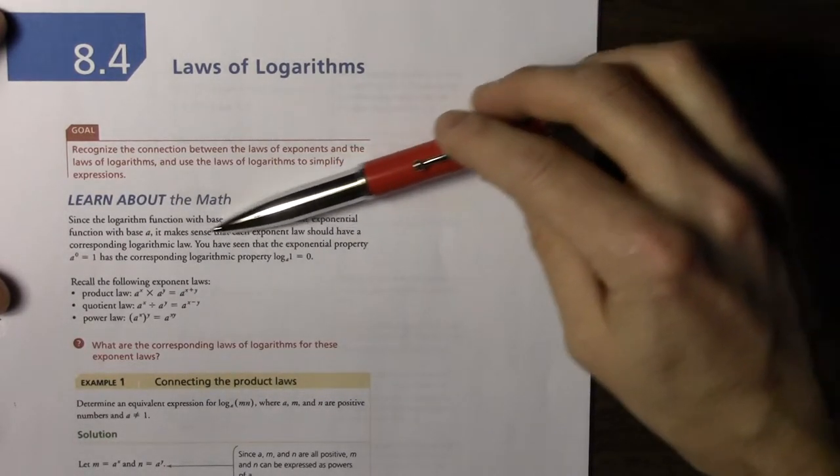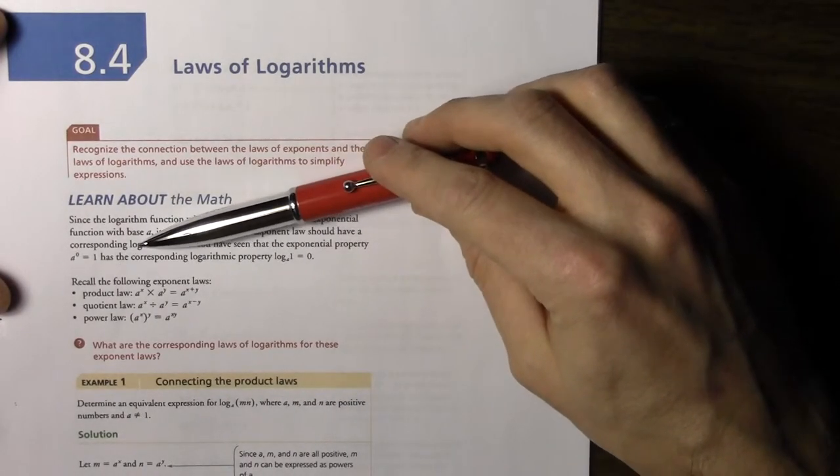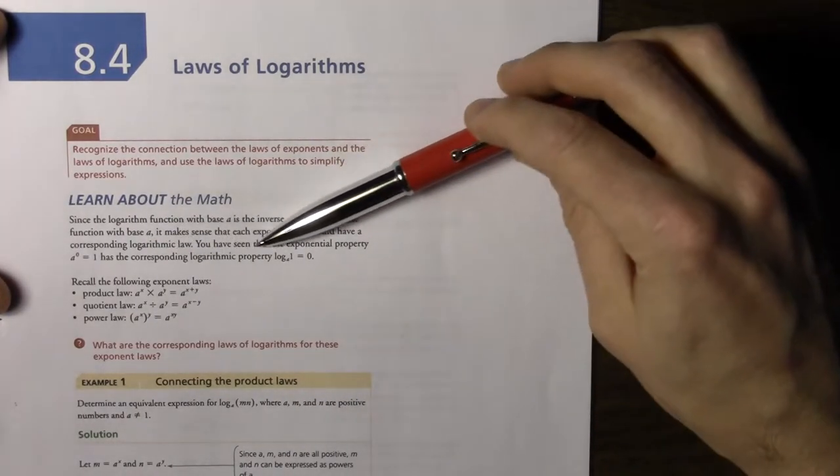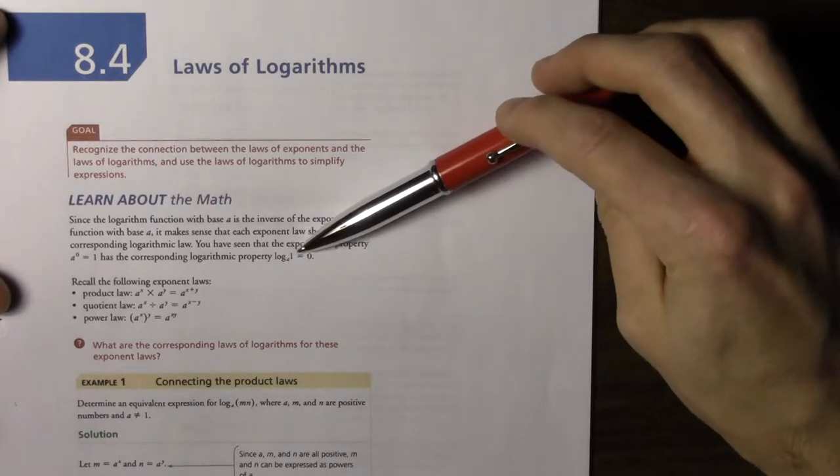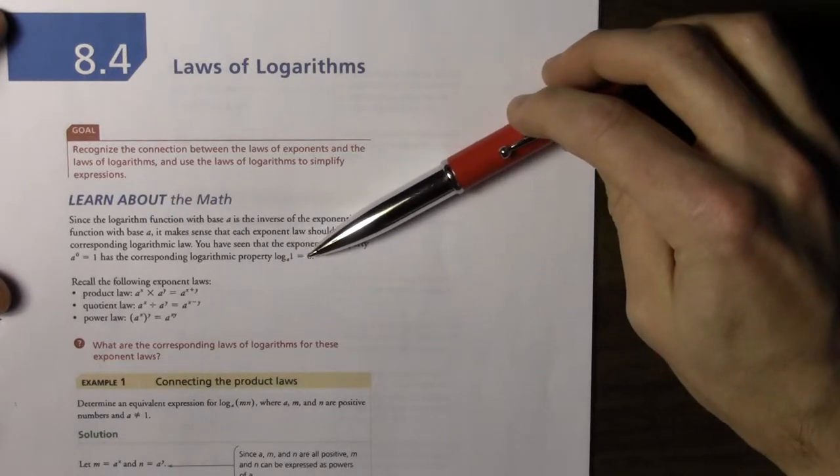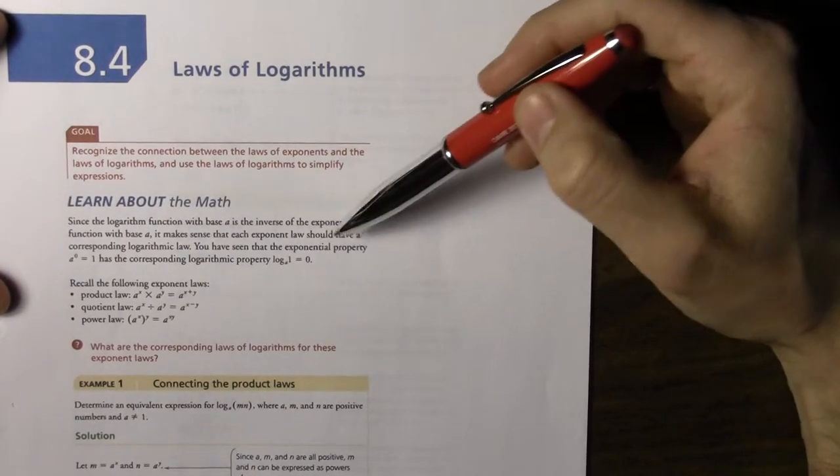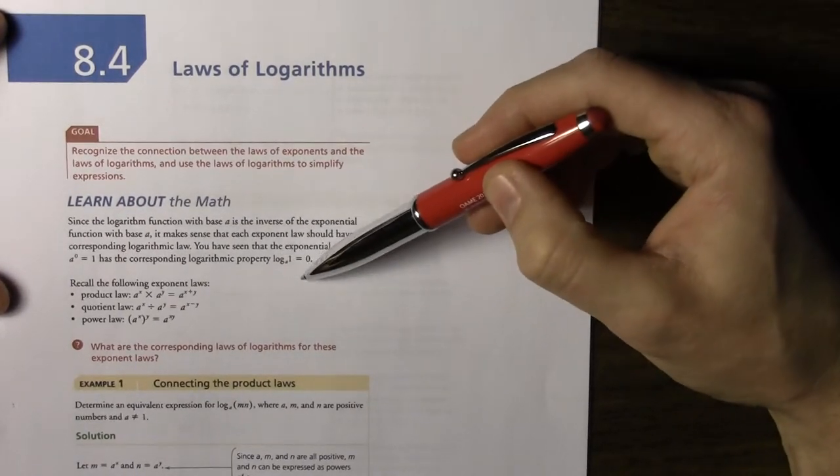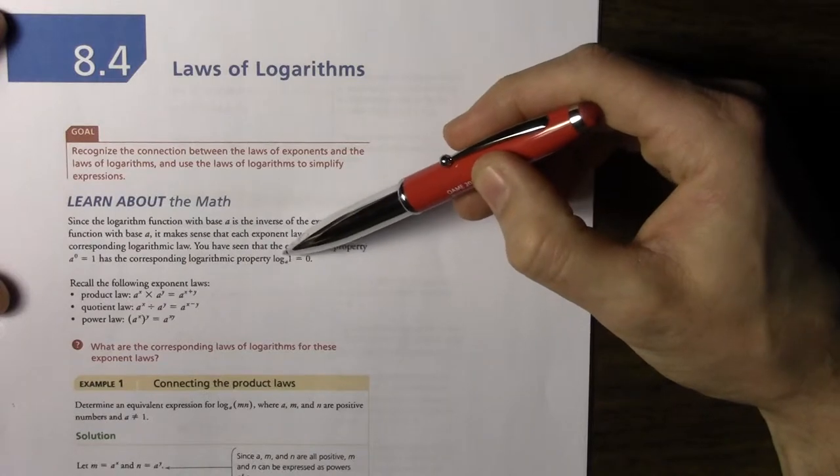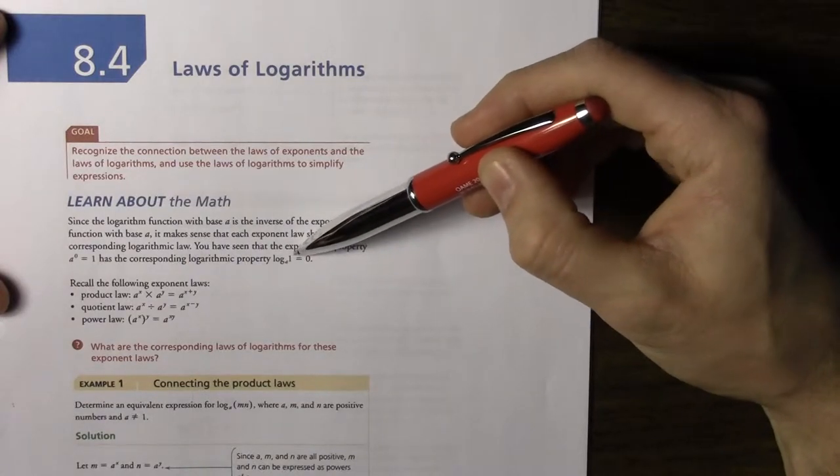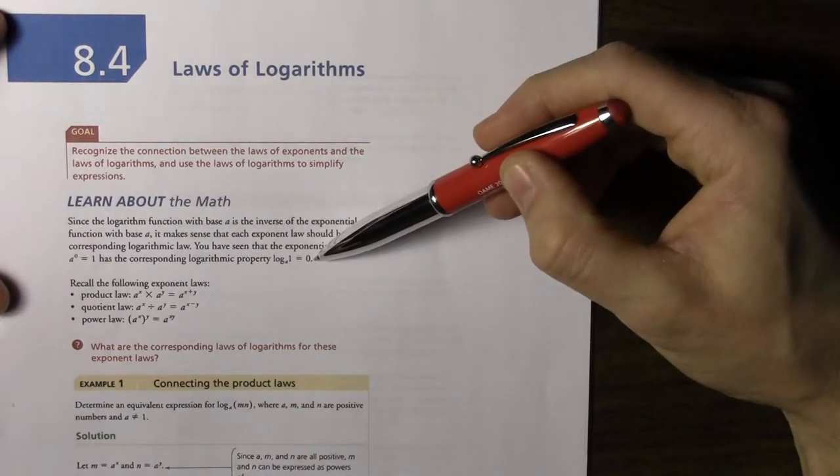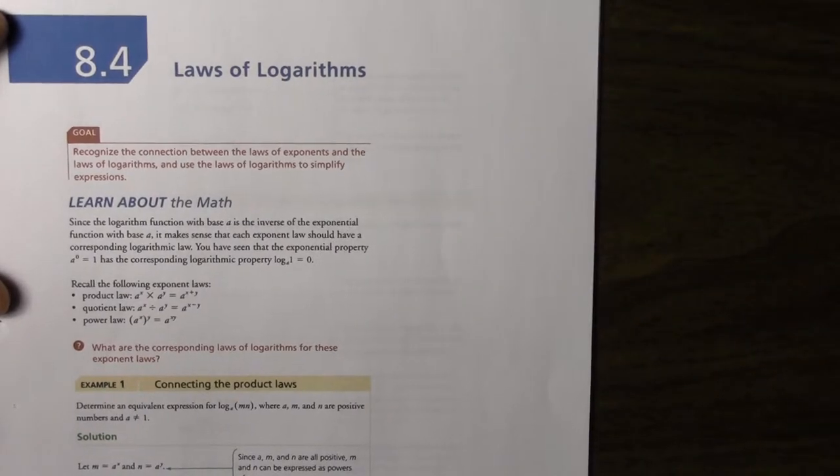You've seen that the exponential property a to the exponent of 0 is equal to 1 has the corresponding logarithmic property log base a of 1 equals 0 and that's why the reason why is because we have to remember what is a logarithm? This is the exponent that a needs to be raised to to give you 1. That exponent is of course 0. Okay, that's how logarithms work.